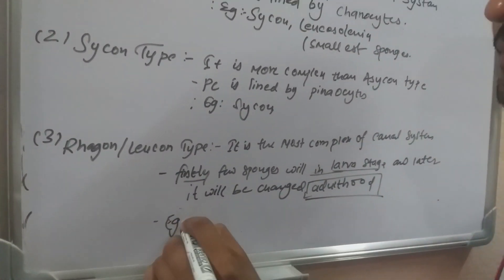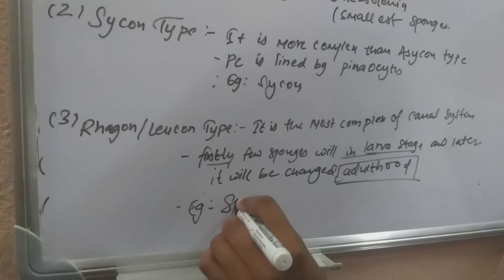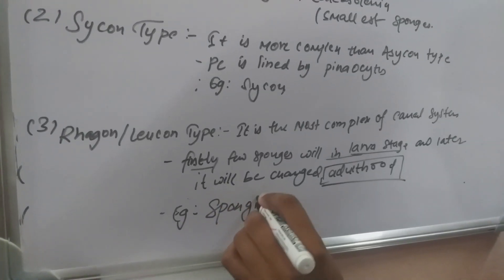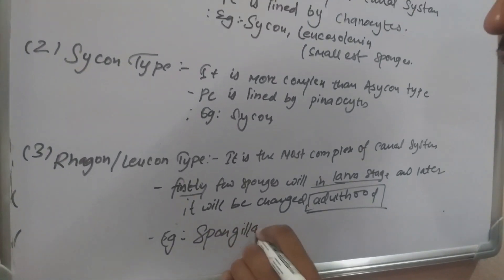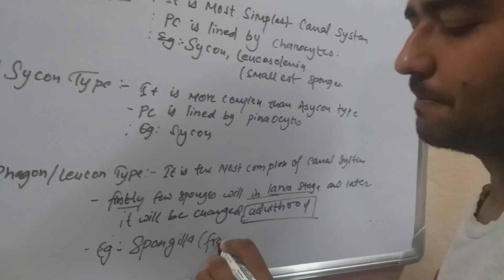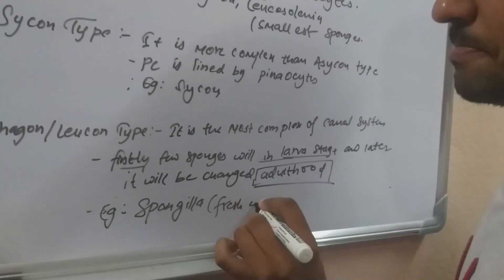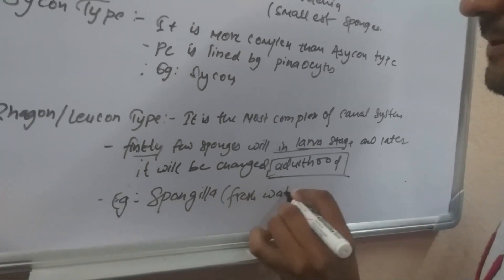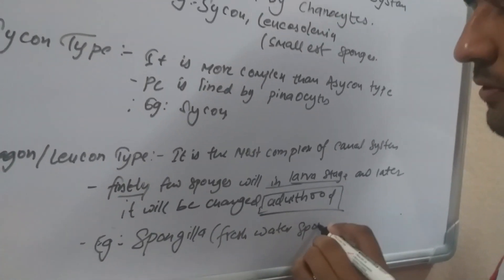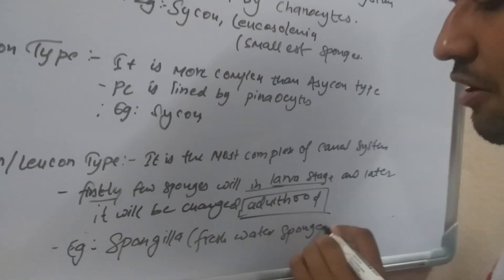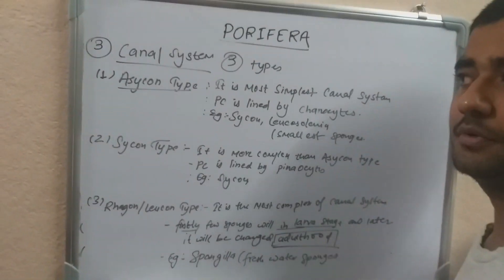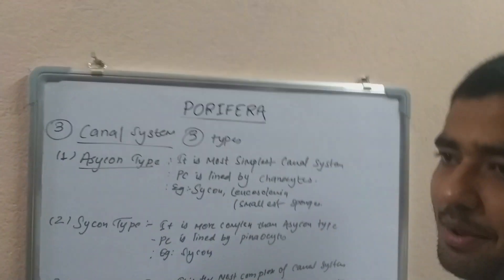A few sponges will be in the larva stage and later will change to the adult mode. This is a freshwater sponge example. This is the canal system with 3 types.